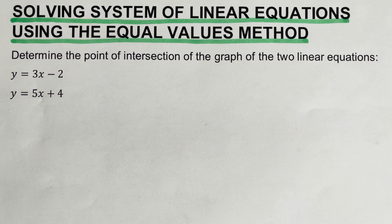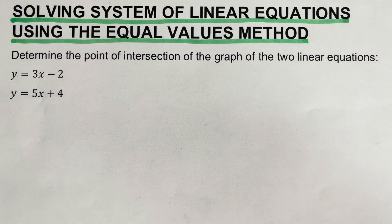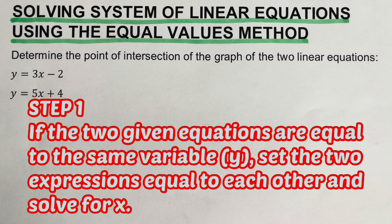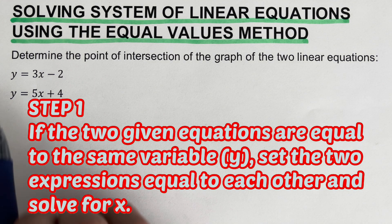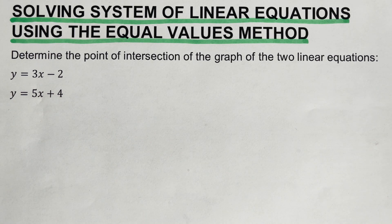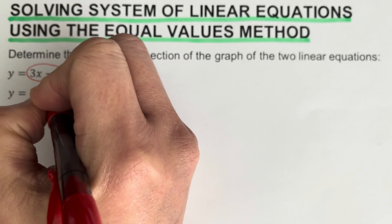There are steps that we need to follow in order to determine the points of intersection between the graphs of these two equations. The first step is: if the two given equations are both equal to the same variable, which is usually y, set the two equations equal to each other and solve for x. In this problem, both are equal to y.